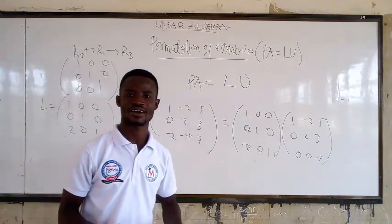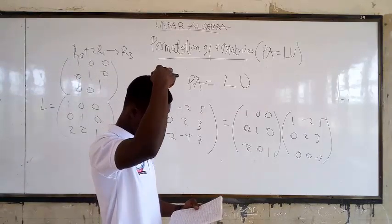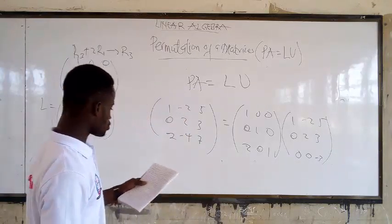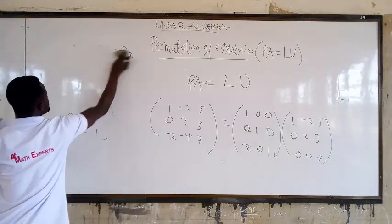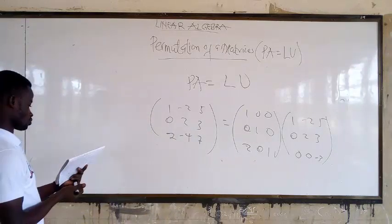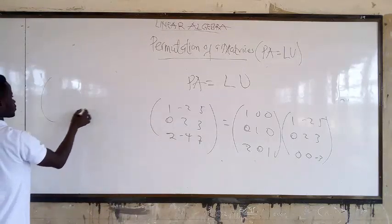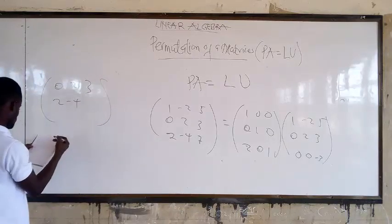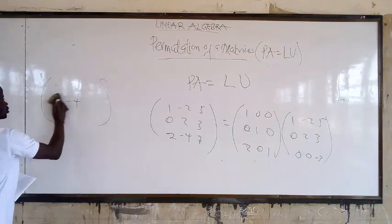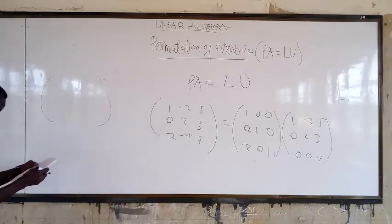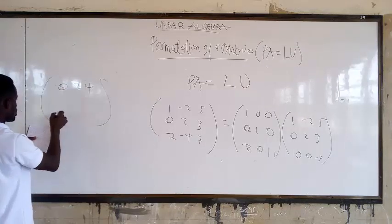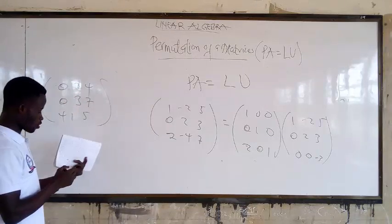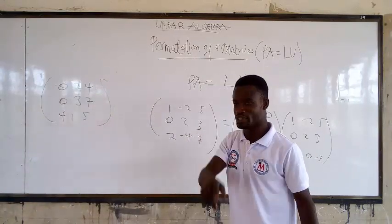Let me give you a question to try. Given matrix A = [[0,2,4],[0,3,7],[4,1,5]], find the PA = LU decomposition and see what you get. See you in the next video!